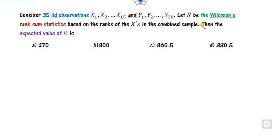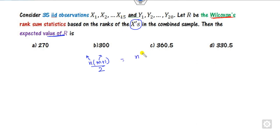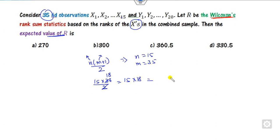The next question again involves the Wilcoxon test, asking for the expected value of R. Using E[R] = n(m+1)/2, where n is the number of elements in x and m is the total number of elements. Here the values are given: substituting 15 and 36 gives 15×(36+1)/2 = 15×18 = 270. So 270 is the correct answer.